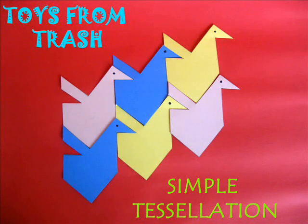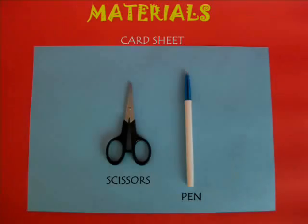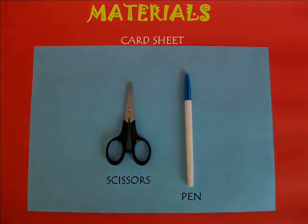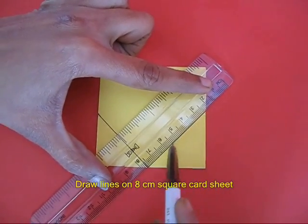A tessellation is a way of tiling a plain surface using the same shape repeated again and again.